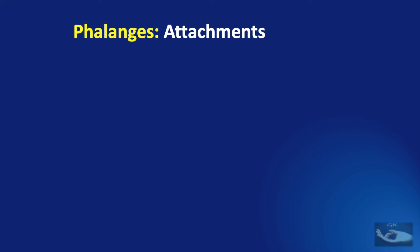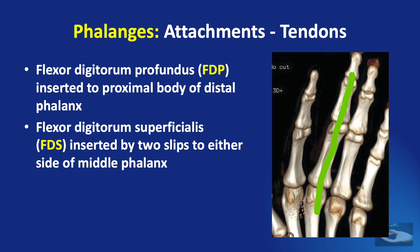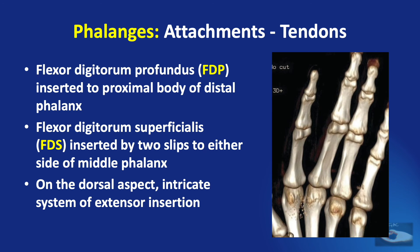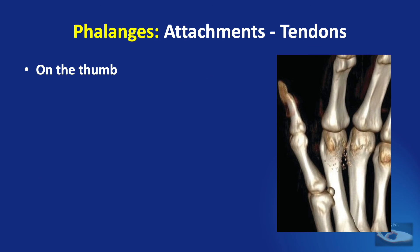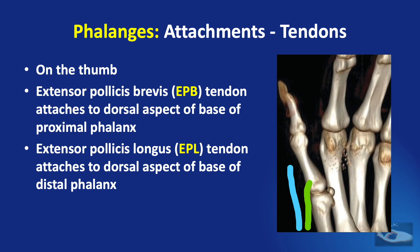The tendon attachments to the phalanges are mainly flexors and extensors. The flexor digitorum profundus inserts into the proximal part of the body of the terminal phalanx, and the flexor digitorum superficialis inserts by two slips to either side of the middle phalanx. On the dorsal aspect, the intricate extensor system is present. On the thumb, the extensor pollicis brevis attaches to the dorsal base of the proximal phalanx and the extensor pollicis longus to the dorsal base of the distal phalanx.